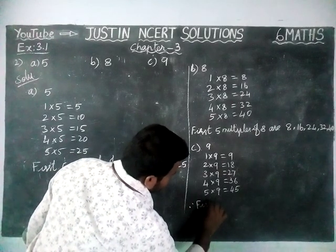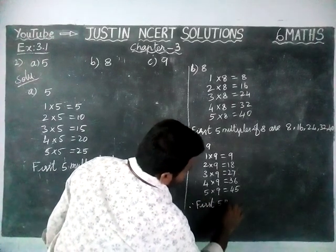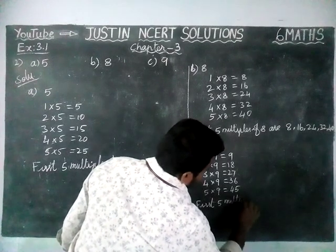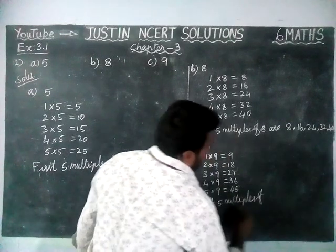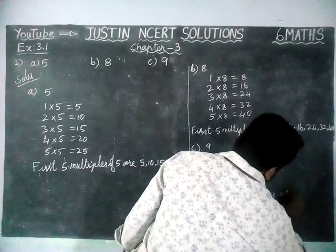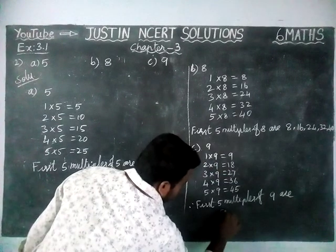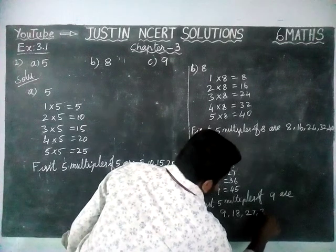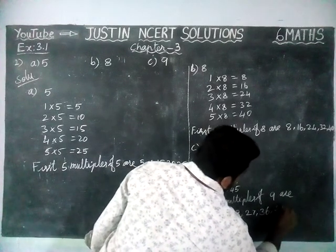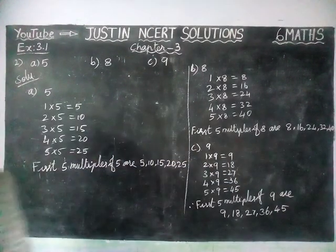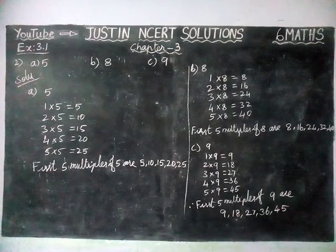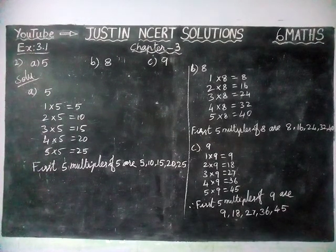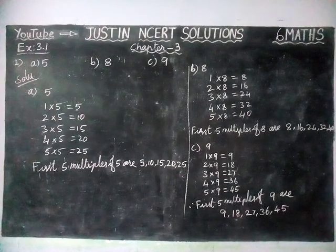Therefore, the first 5 multiples of 9 are: 9, 18, 27, 36 and 45. So that's all, friends. Kindly give your suggestions in the comments box and share it with your friends, and don't forget to subscribe to our channel, Justine NCRD Solutions. Thank you.